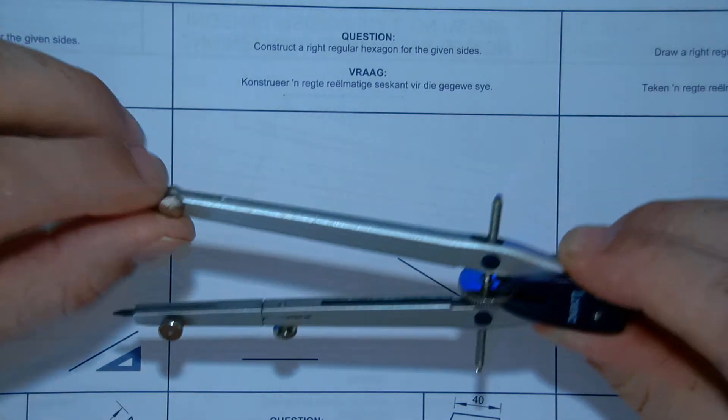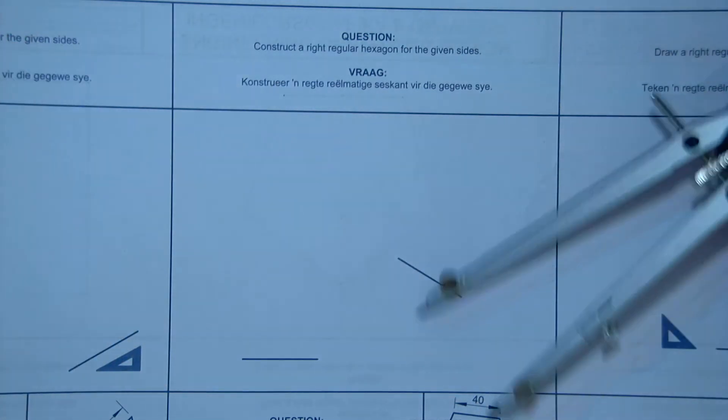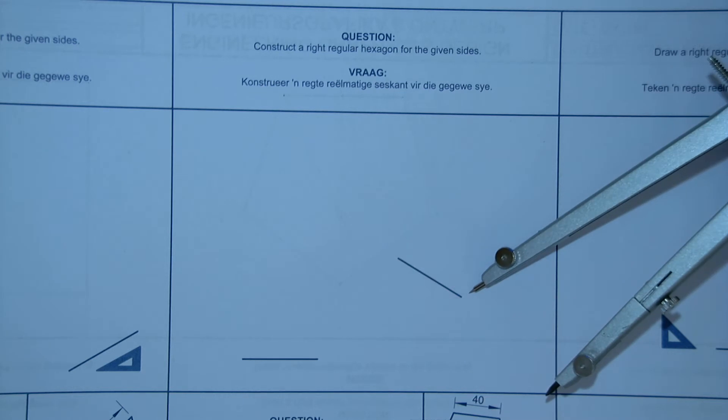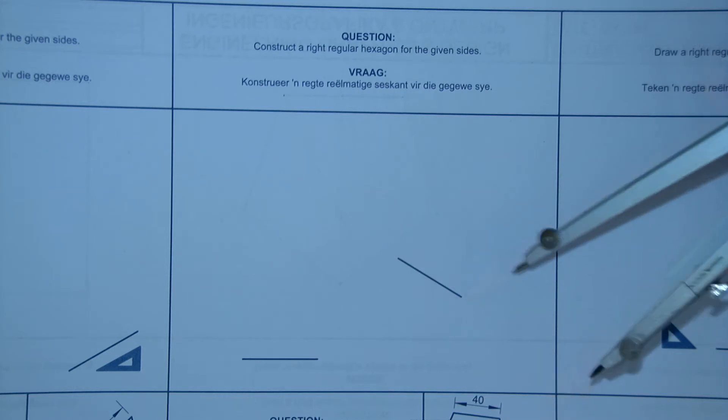The problem is if you use 30, 60 degrees with this line here on the side, it's at an angle, so it's going to be difficult to determine 30 and 60 degrees. It's going to get difficult and you will be out by some margin.